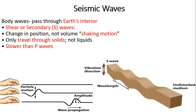The next kind of wave is secondary waves (S-waves). S-waves are slow, travel in a shaky motion, and change position but do not change the volume of the Earth's surface. They cannot travel through liquids. S-waves are slower than P-waves.